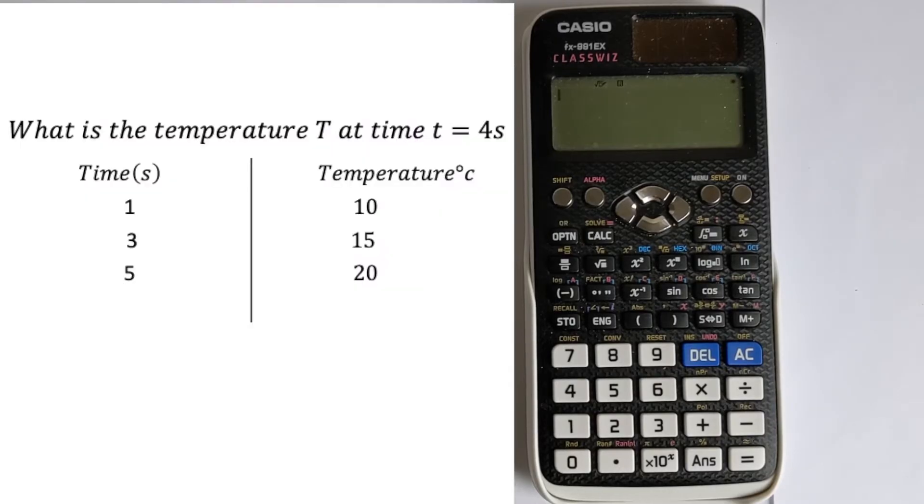So the question is, what is the temperature T at a time of T equals 4 seconds? So on the left-hand side of the table, we've got some time values, and then we've got some temperature values. We've got 1,